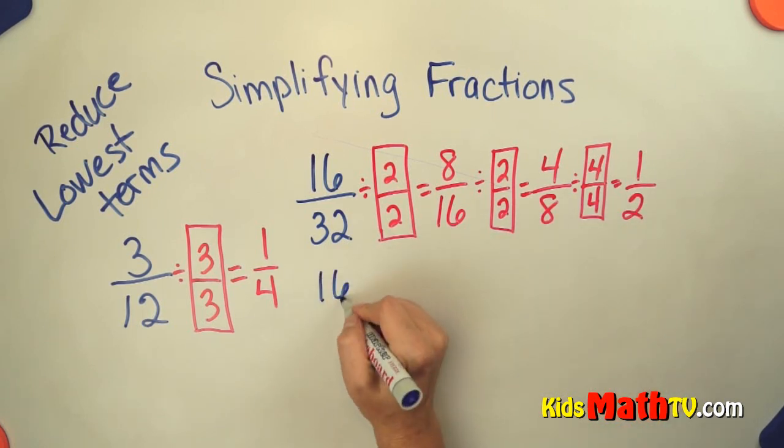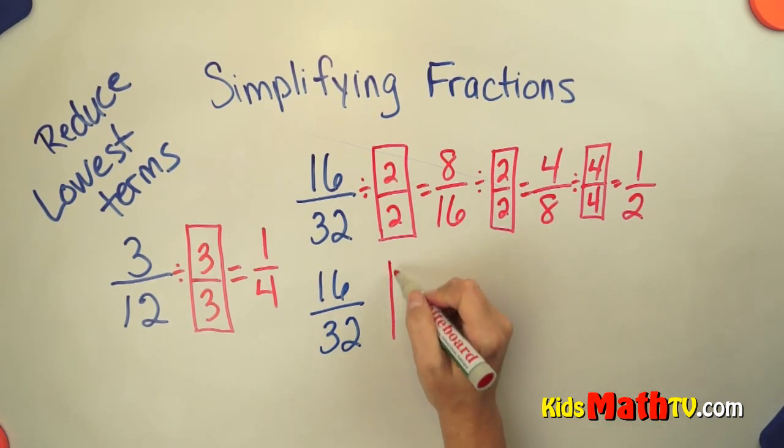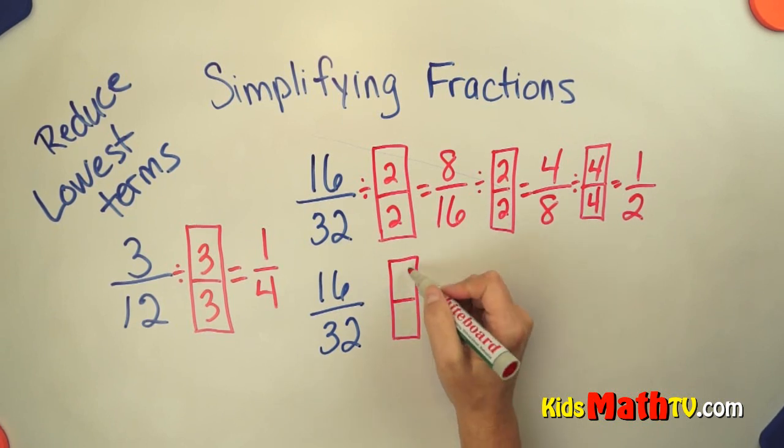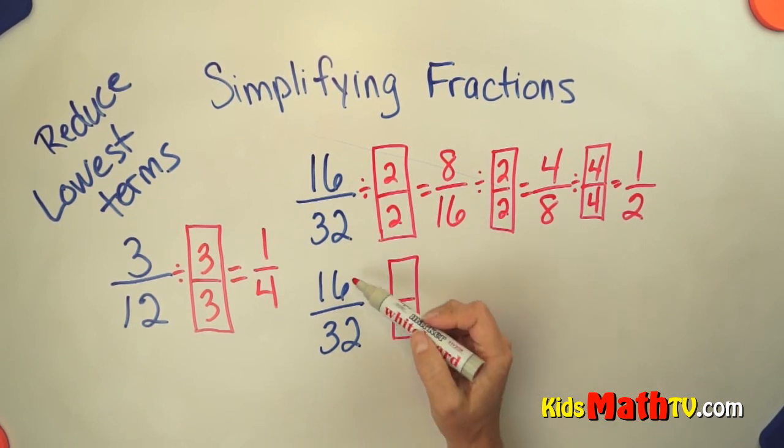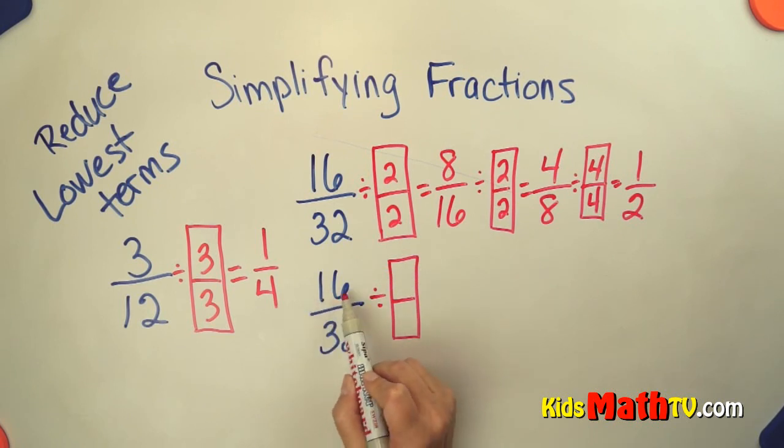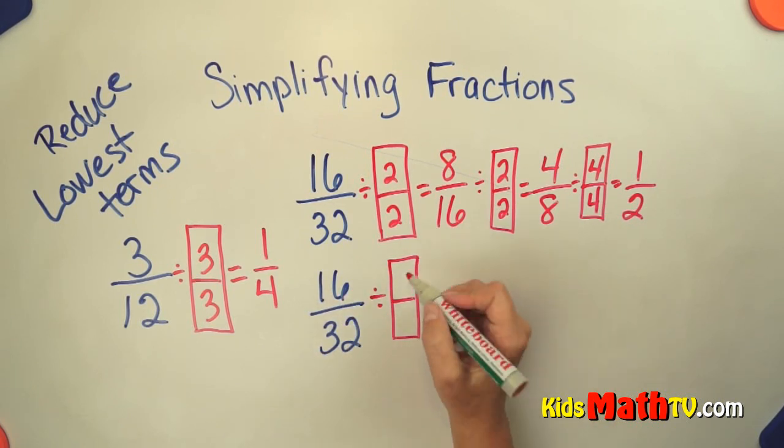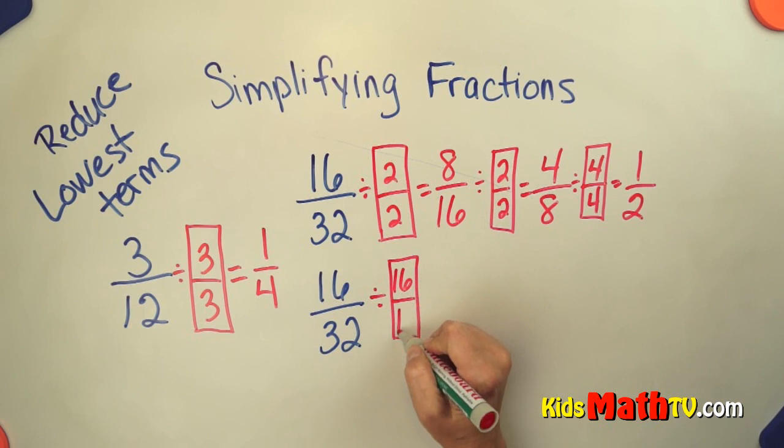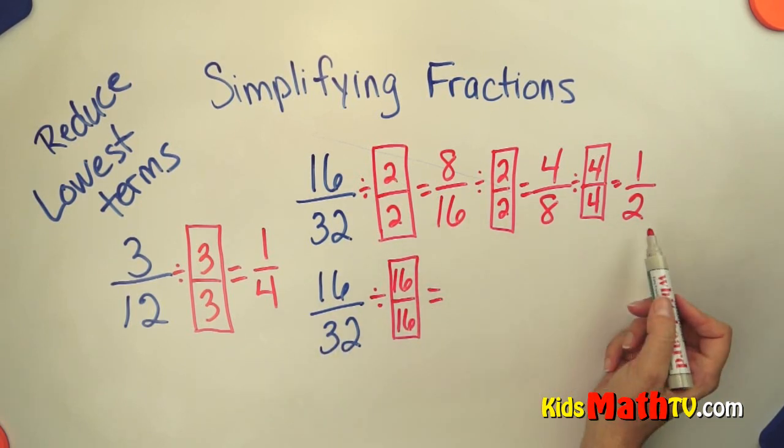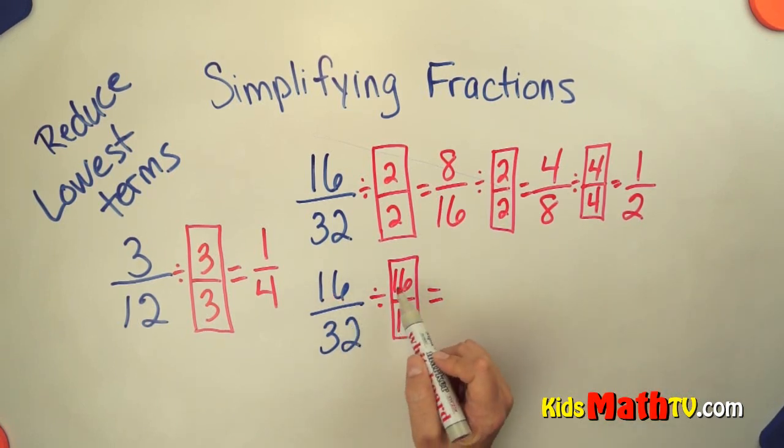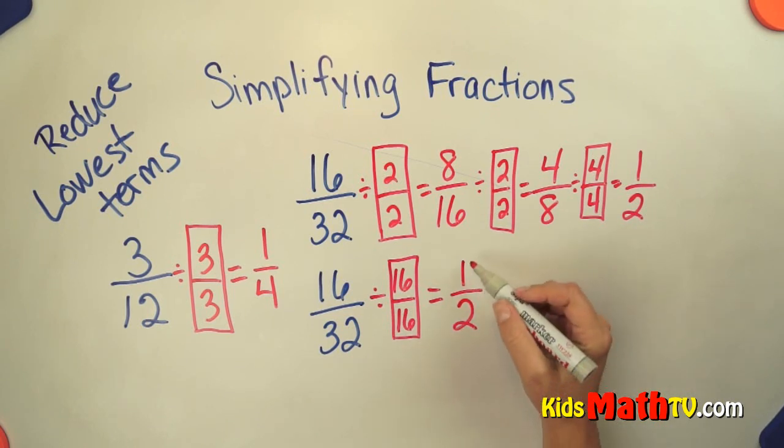Let me show you another way to do that same problem. If I have 16 over 32 I'm still going to divide it by 1. I have to decide what I want that 1 to be. I know that 16 divides 16 it also divides 32. So I can make my 1 into 16 over 16 and do this in one step instead of a number of steps. 16 divided by 16 is 1. 32 divided by 16 is 2. 1 half is in simplest terms.